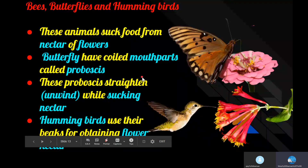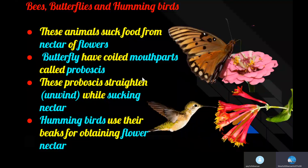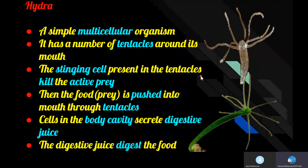Mosquitoes also have a proboscis for sucking blood from human beings and other animals. Hydra is a simple multicellular organism which possesses a number of tentacles surrounding the mouth. The stinging cells present in the tentacles kill the actively moving prey, and then the food is pushed into the mouth through the tentacles. Inside the body cavity, digestive juices secreted by the surrounding cells help to digest the food.